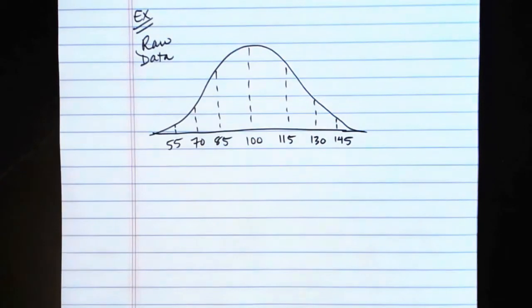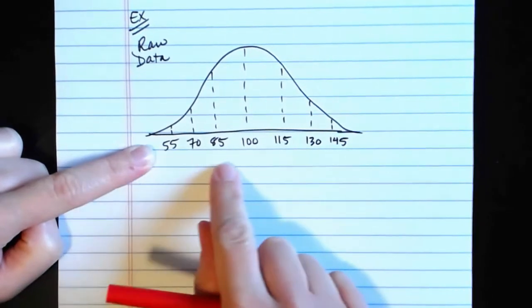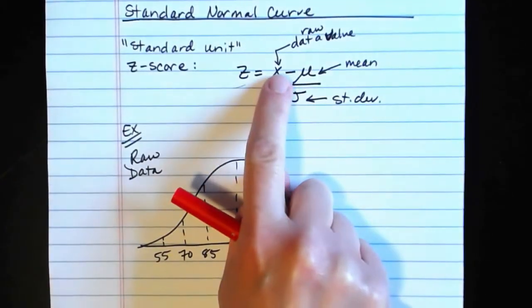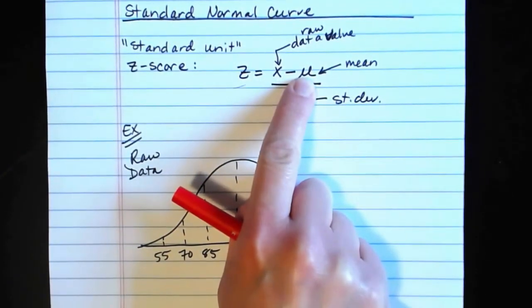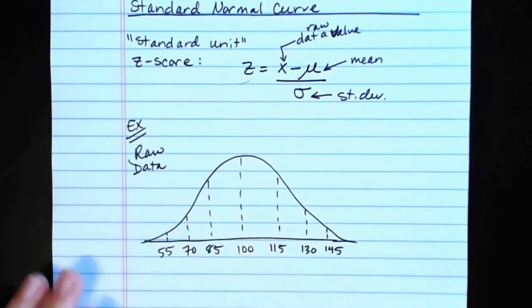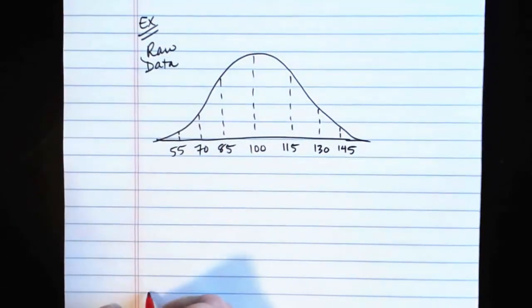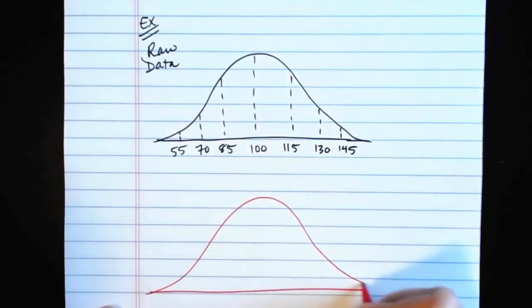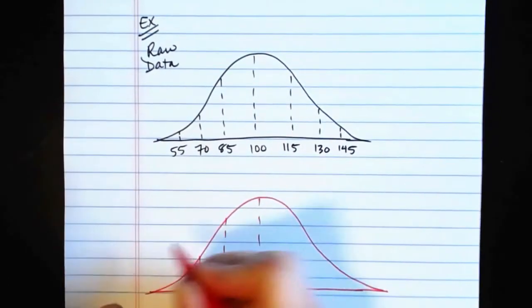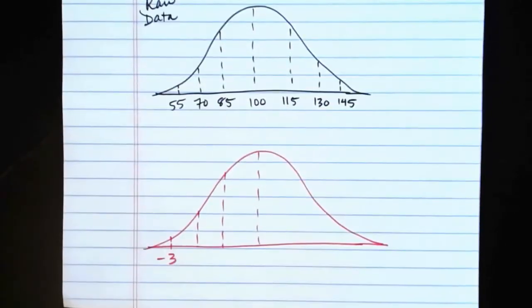If I start with the value of 55, I would take 55 and subtract the mean of 100. 55 minus 100 gives us negative 45. So that would be this part here, 55 minus 100 gives us negative 45, divide by the standard deviation of 15. Negative 45 divided by 15 gives us a value of negative 3. So after this unit conversion, the piece that was 55 is now negative 3.